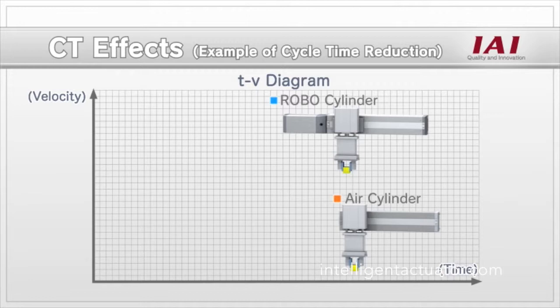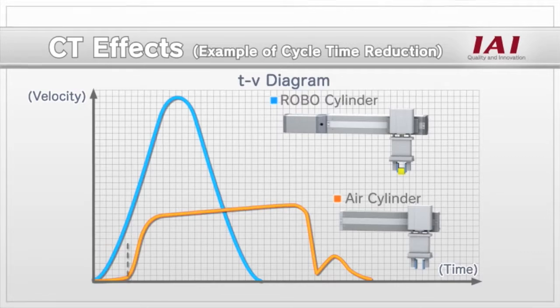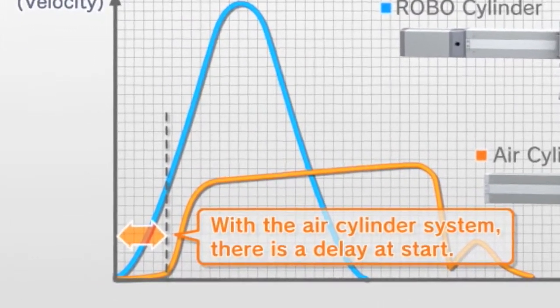First, with the air cylinder system, there is a delay of approximately 0.1 second at start, after a signal is received, until the actuator actually starts moving.